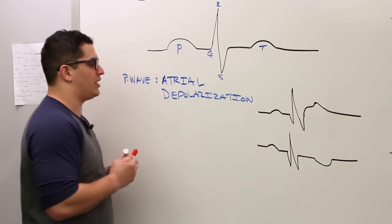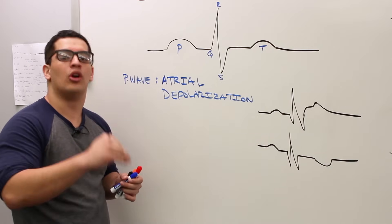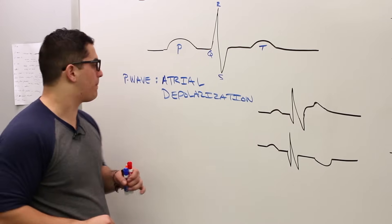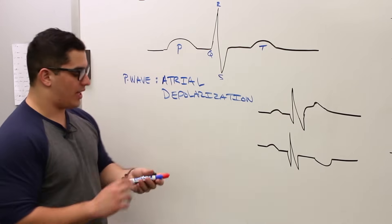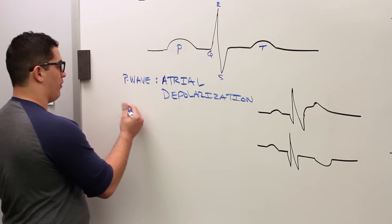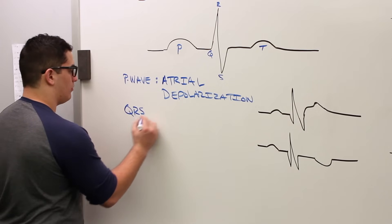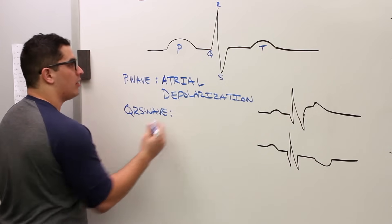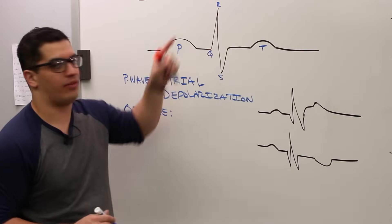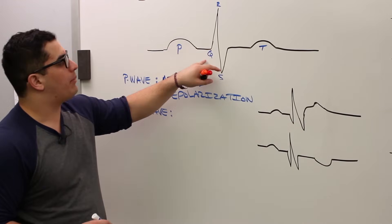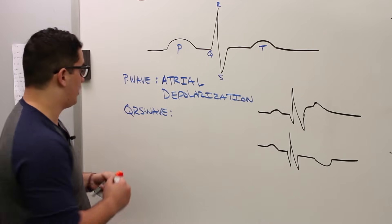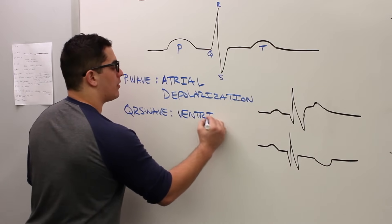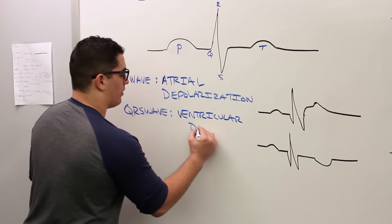Depolarization means that the inside of the cell is becoming more positive — it's conducting action potentials. This next one is the QRS wave. The QRS wave is this big negative, positive, negative deflection, and it represents ventricular depolarization.